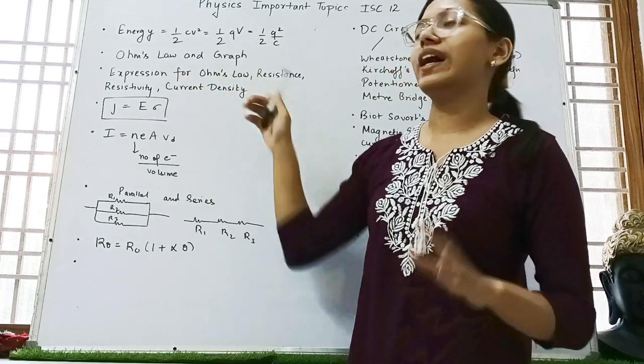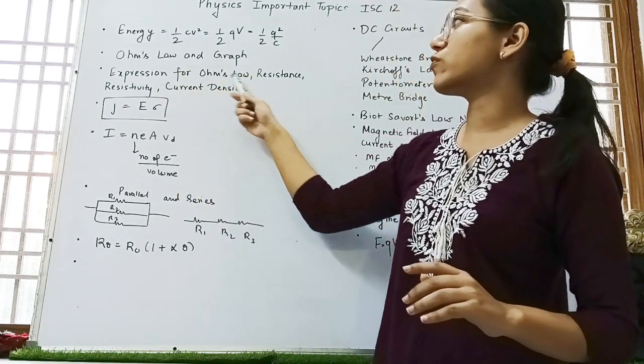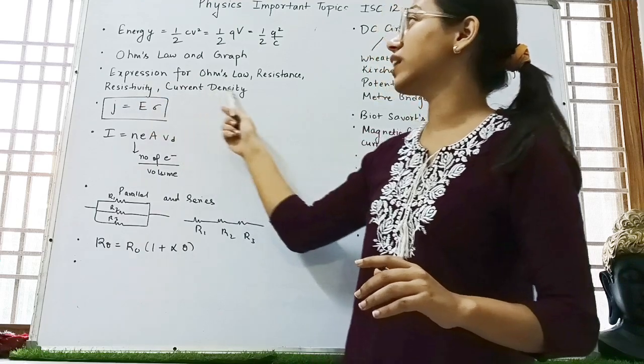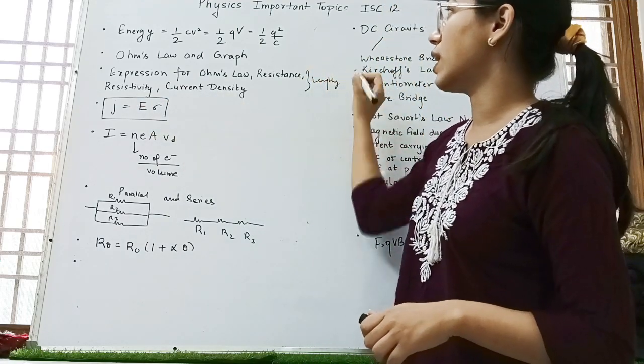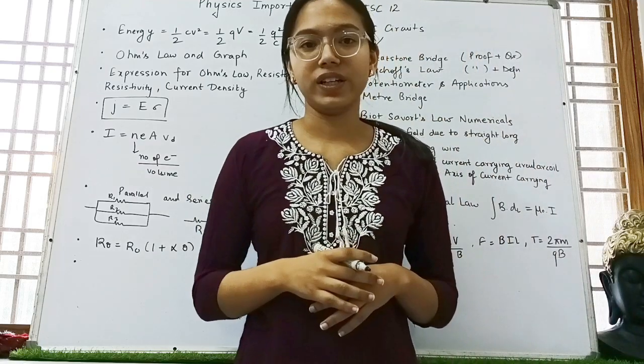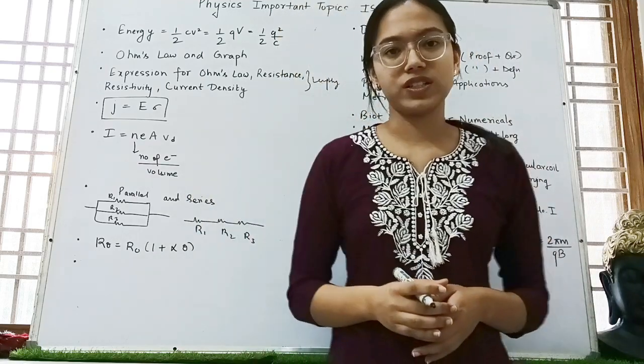Then we have Ohm's law and its graph. Then expression for Ohm's law, resistance, resistivity and current density. This one is a lengthy derivation. And sometimes you may forget it. But the only way to learn the derivation is by rewriting it.